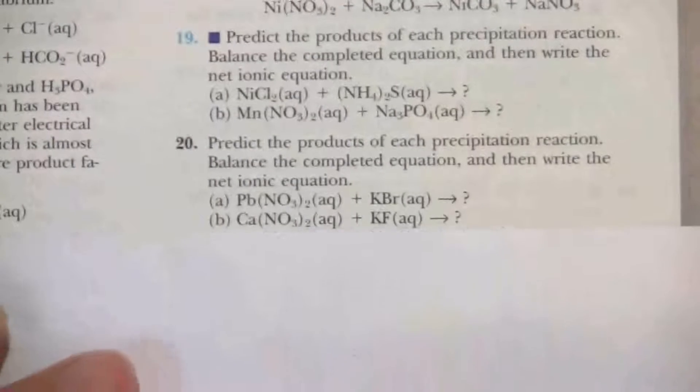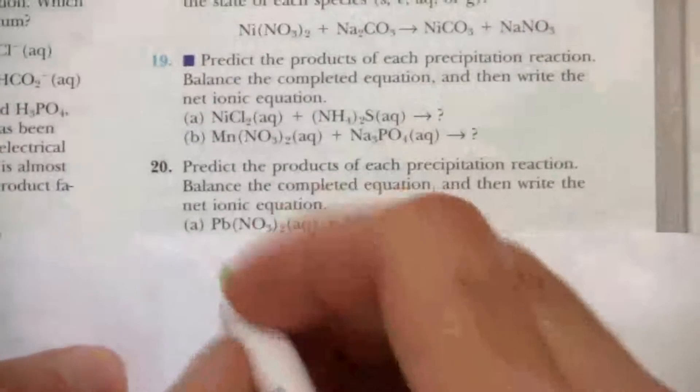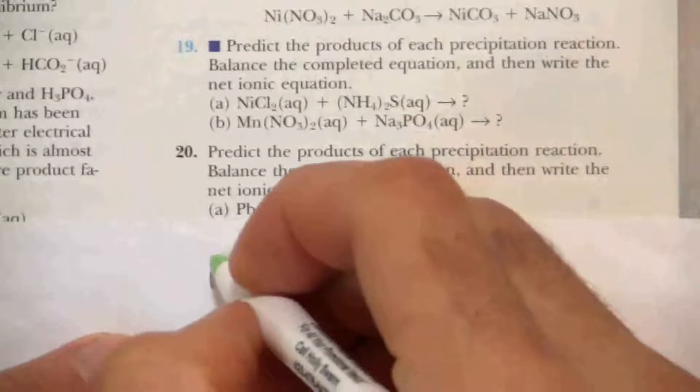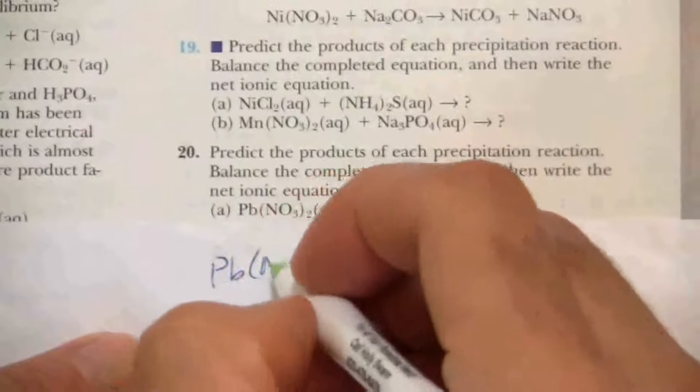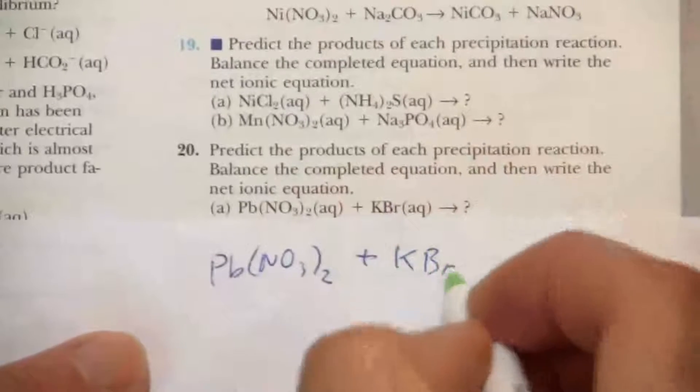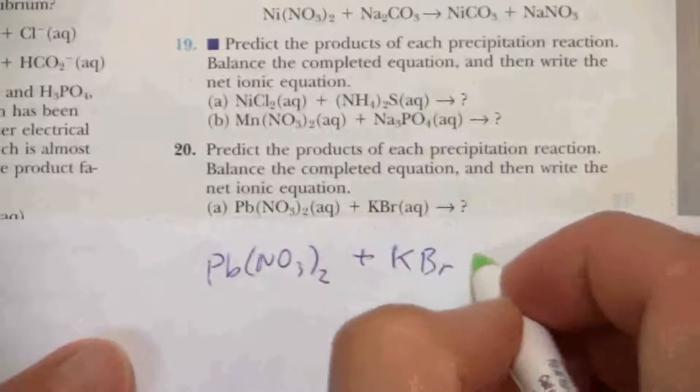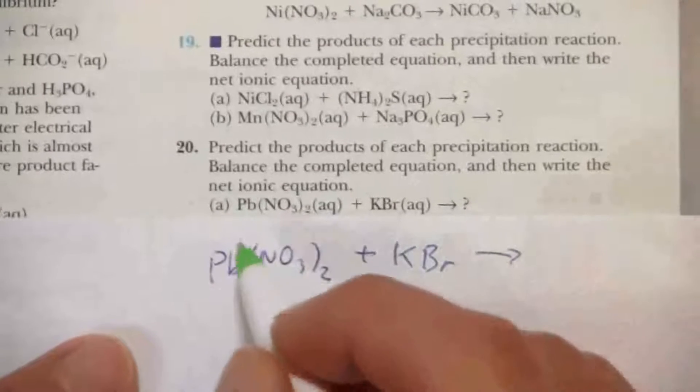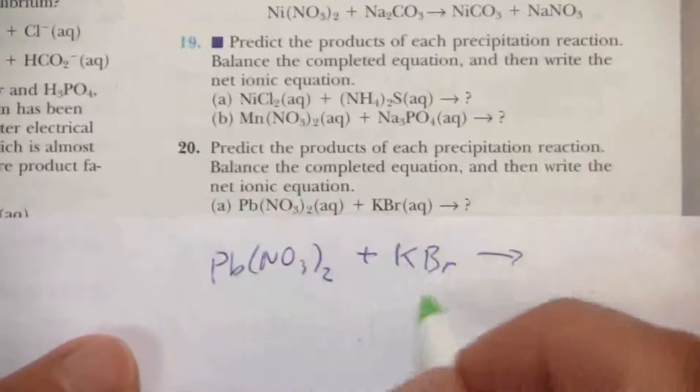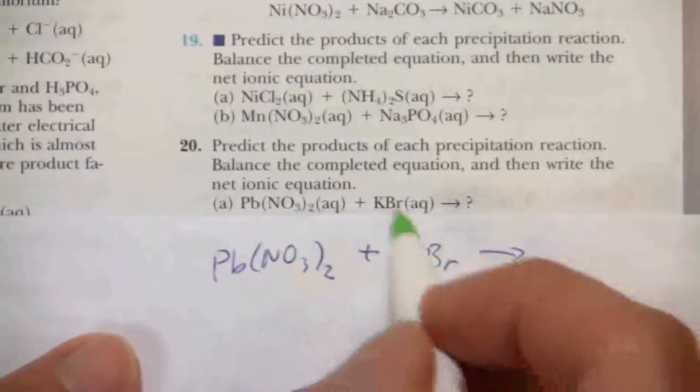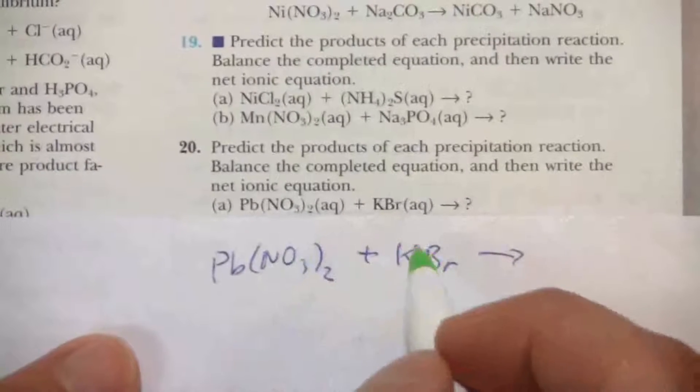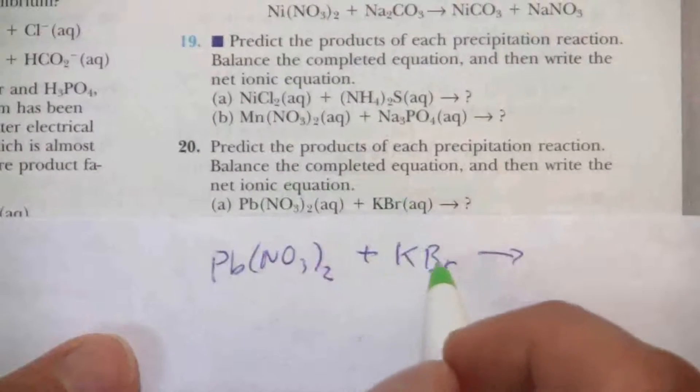So let's look at this first one. We have lead nitrate, Pb(NO3)2, plus KBr, potassium bromide. So what's going to happen? We have two ionic compounds. They're going to switch ion pairs. The potassium will go with the nitrate, the cation with an anion, the cation with the other anion.